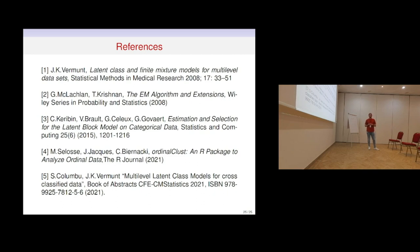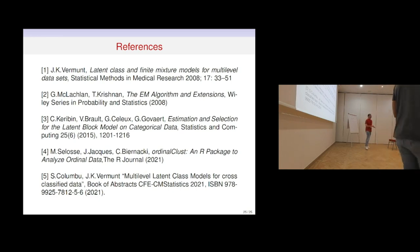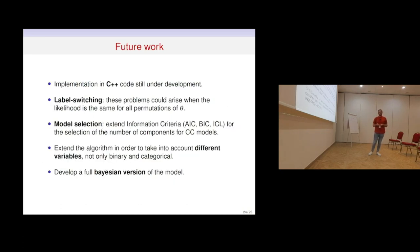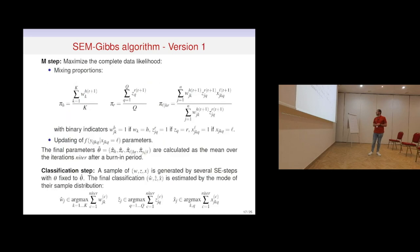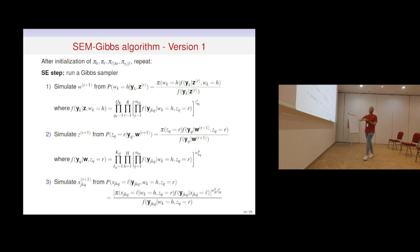Here are the main references. Thank you for your attention. Is there any question? In the first step, you simulate W from the posterior conditional, right? And how do you simulate it? Because maybe it's not straightforward. Yes, in the Gibbs sampler approach we use the full conditional. But are you able to easily sample from this distribution? Yes, because we have the closed form of the full conditional distributions.